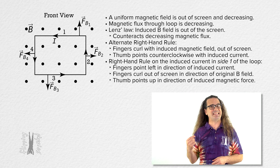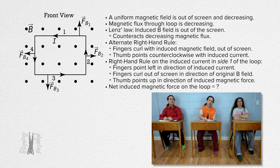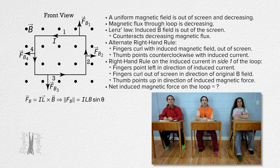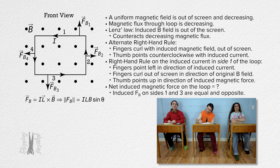Now, Billy, please determine the net force caused by all the induced magnetic forces on the rectangular loop. Start by looking at just sides one and three. The magnitude of the induced magnetic force equals the current times the length of the wire times the magnitude of the magnetic field times the sine of the angle between the two. For sides one and three, all of those values are the same — the currents, the lengths, the magnetic field magnitudes, and the angles are the same — but the directions of the magnetic forces are opposite. Therefore, the net induced magnetic force on sides one and three equals zero.